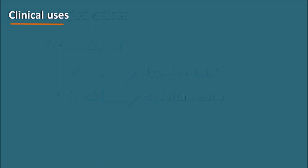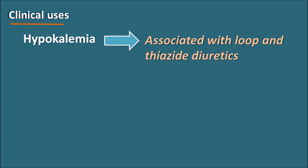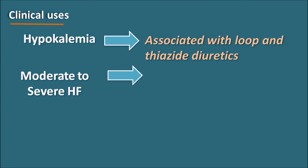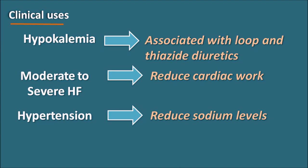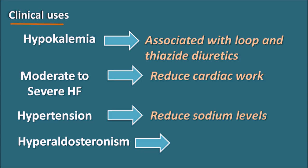Clinical uses of potassium-sparing diuretics include: treatment of hypokalemia, particularly when loop or thiazide diuretics have caused potassium depletion; treatment of moderate to severe heart failure, as these drugs can decrease cardiac workload; treatment of hypertension when other antihypertensive drugs are insufficient, since they reduce sodium levels and body volume to lower blood pressure; and treatment of hyperaldosteronism, particularly with spironolactone and eplerenone, which antagonize aldosterone.